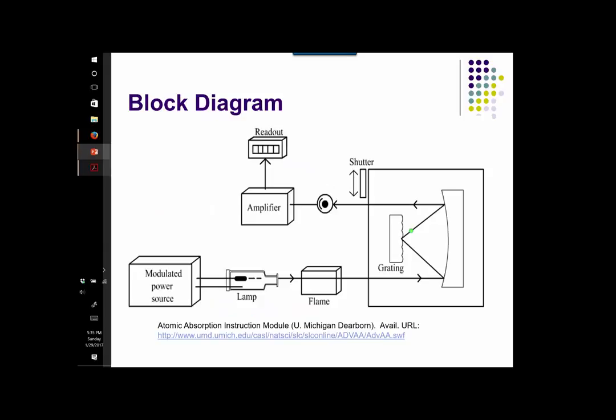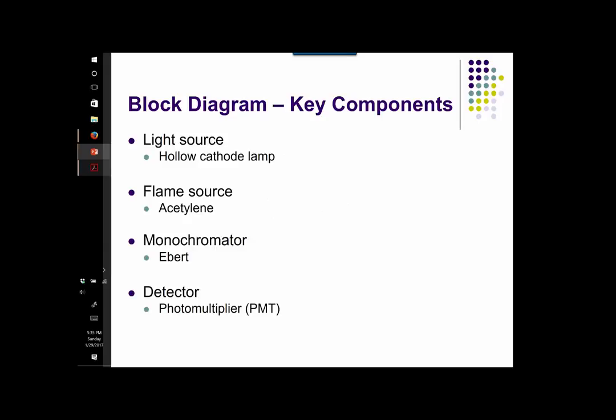Now let's take a look at the basic block diagram for a Flame AA instrument. As you can see, it consists of four basic components: a light source, the flame, a monochromator, and a photodetector. In Flame AA, the light source is typically a hollow cathode lamp. An acetylene-air gas mixture is often used to produce the flame. A monochromator is used to separate and select the wavelengths of light, which are then measured using a photomultiplier.